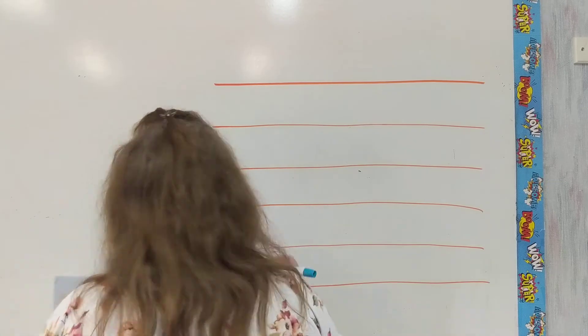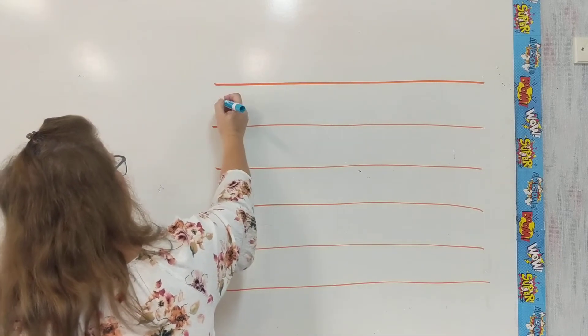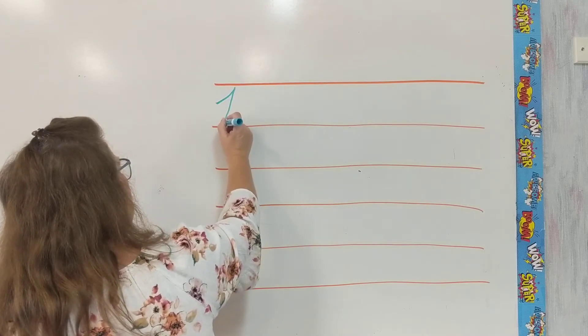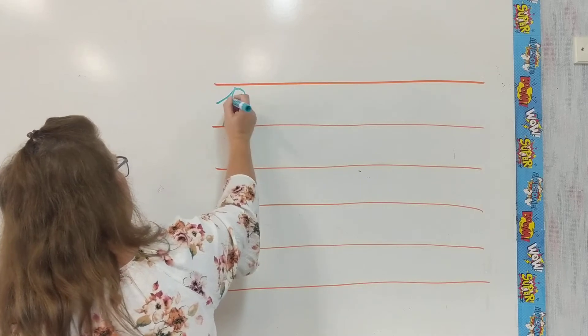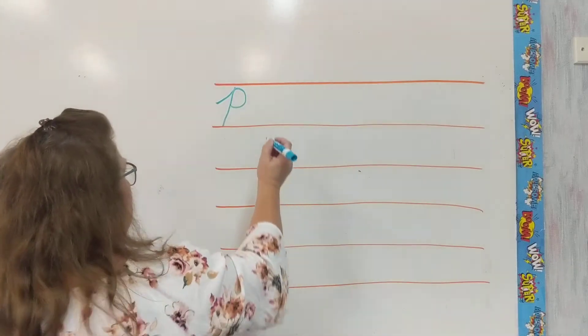So watching up here, to make our capital P, we're going to start just a little above our pretend line and we're going to slant up almost to the top line, go down. We're going to retrace back up. We're going to put a little half circle on it and close it up. That is our capital P.